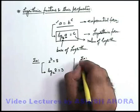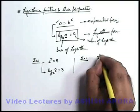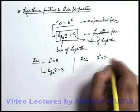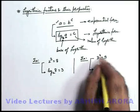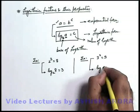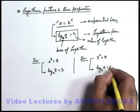For another example, we all know that three square is equal to nine. Its logarithmic form can be written as log of nine to base three is equal to two.